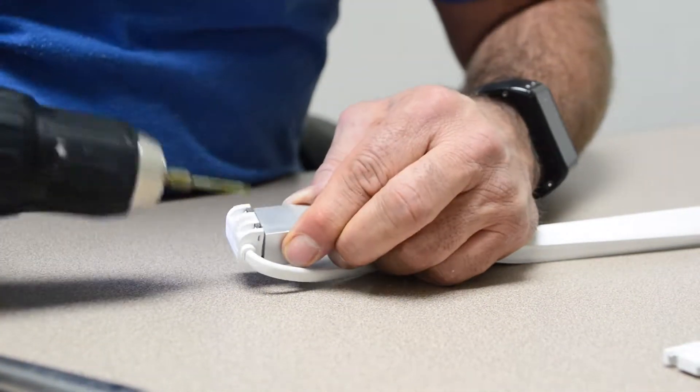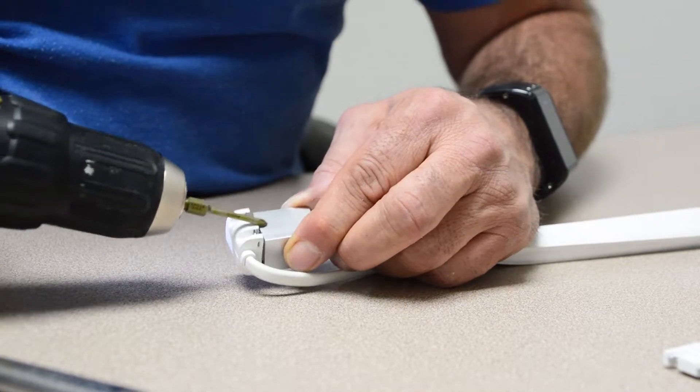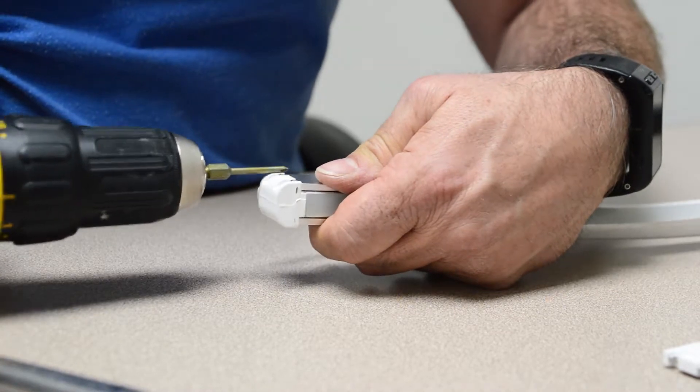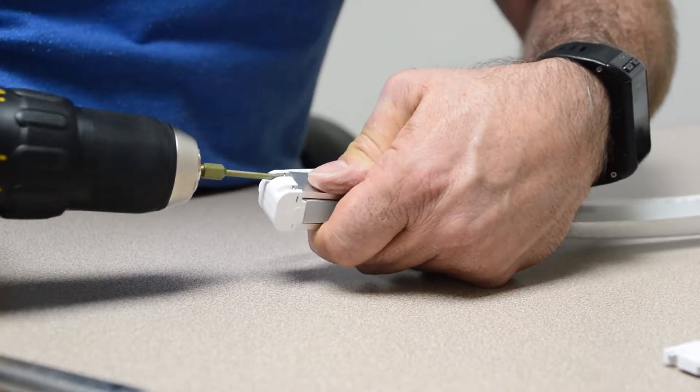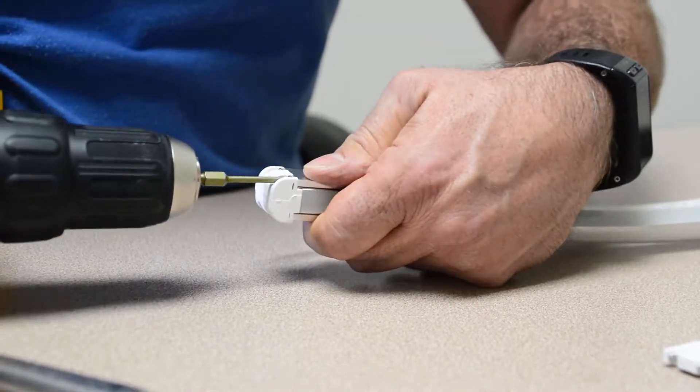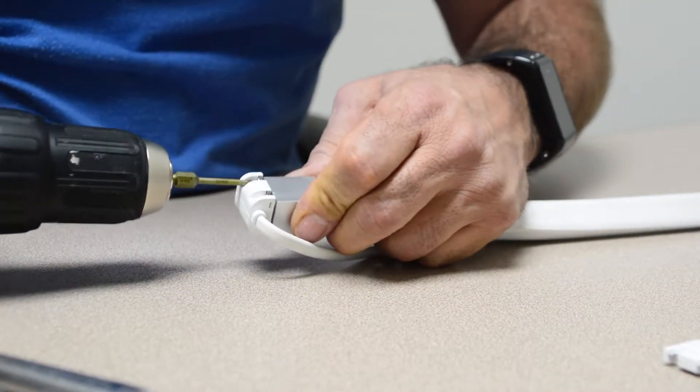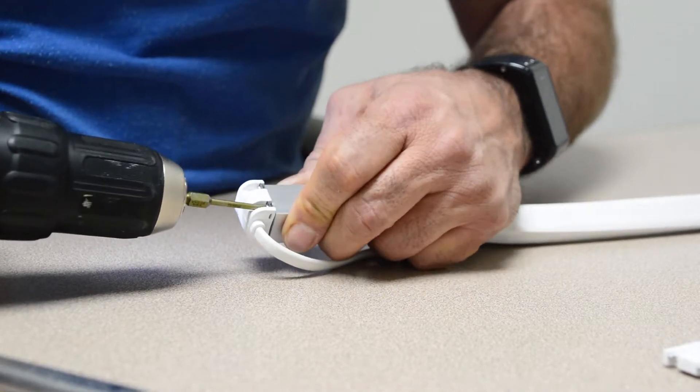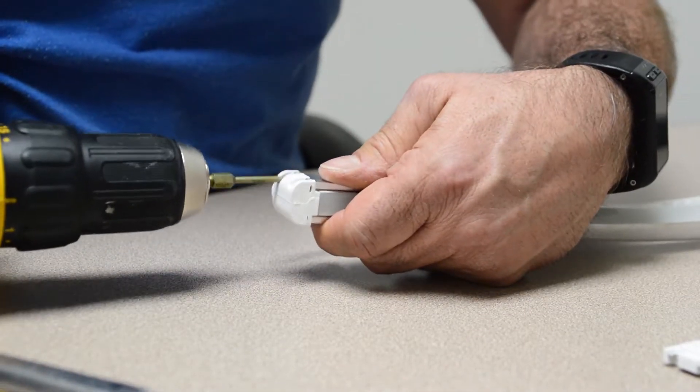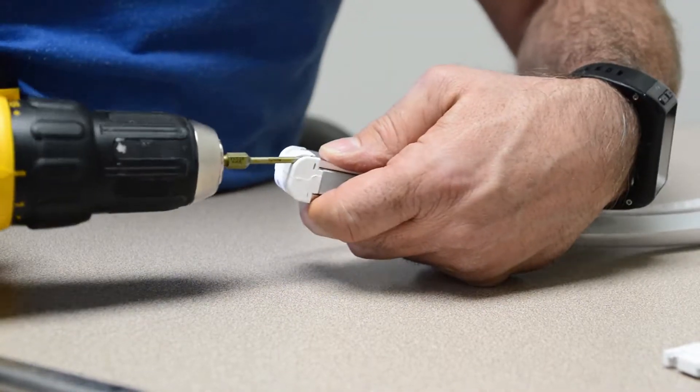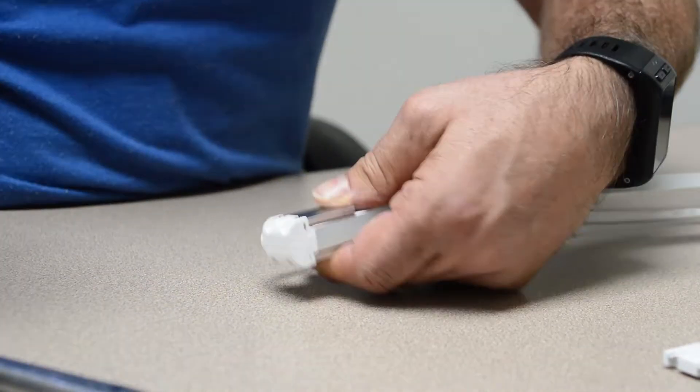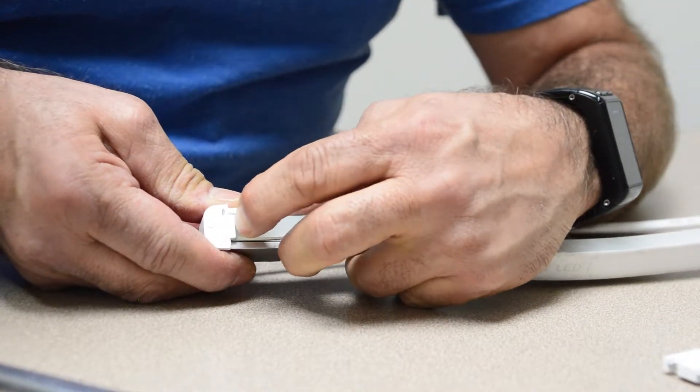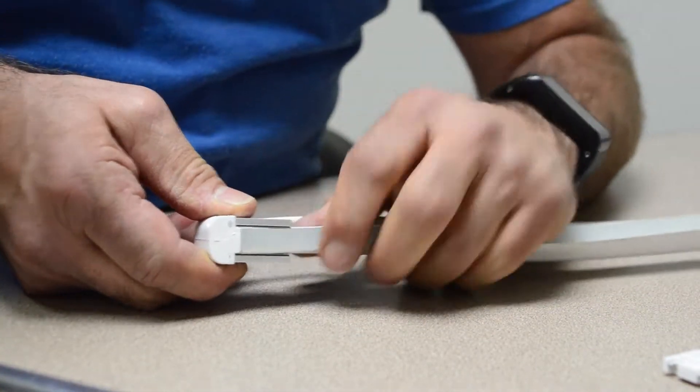Until the plastic of the connector touches the aluminum block. Do not over-tighten and strip or break the screws. Once the plastic is touching the aluminum block, it has crushed the silicone gasket against the material creating a waterproof seal.